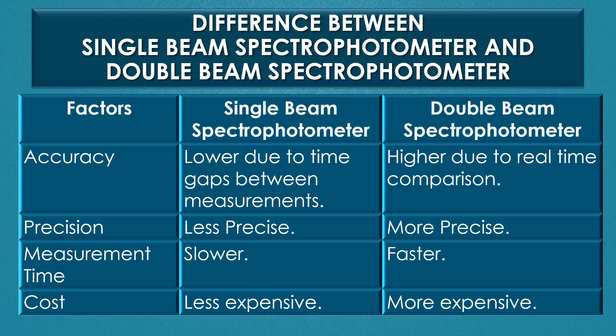Regarding measurement time, the process of a single beam spectrophotometer is slower, but the process of a double beam spectrophotometer is faster. Regarding cost, a single beam spectrophotometer is less expensive in nature. In contrast, a double beam spectrophotometer is more expensive in nature.